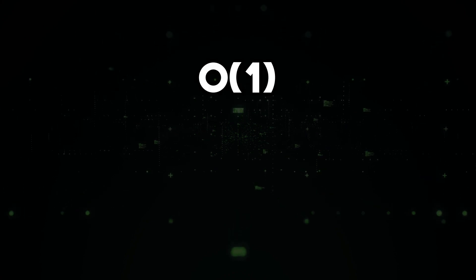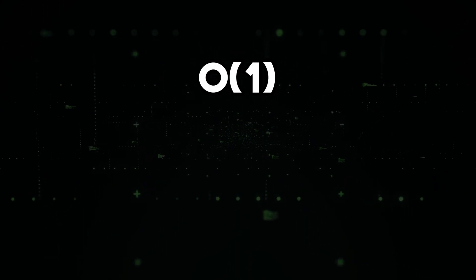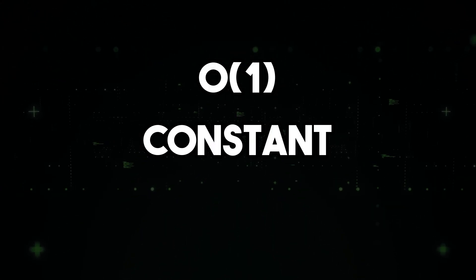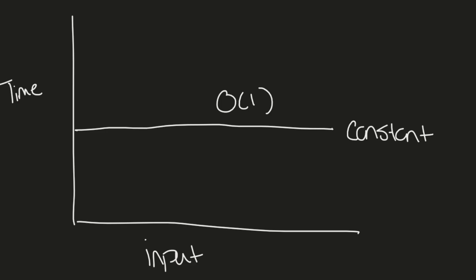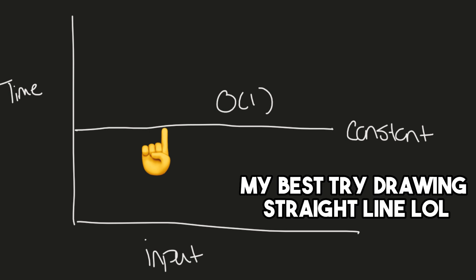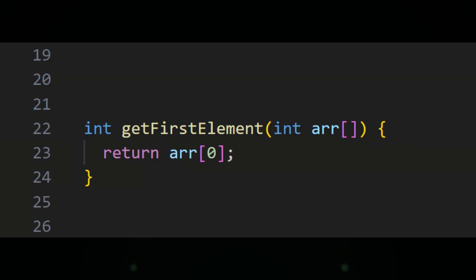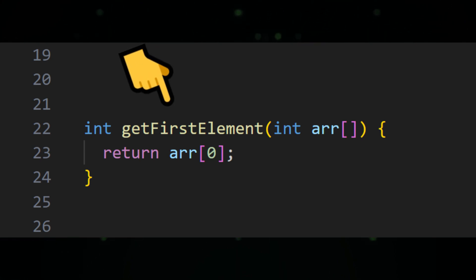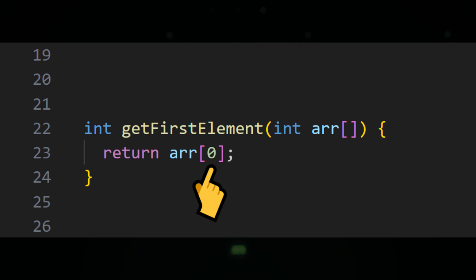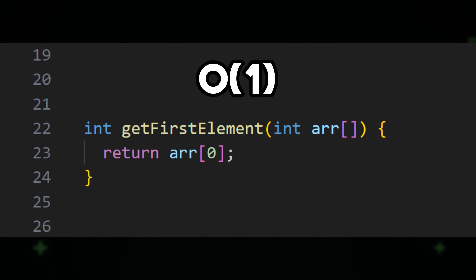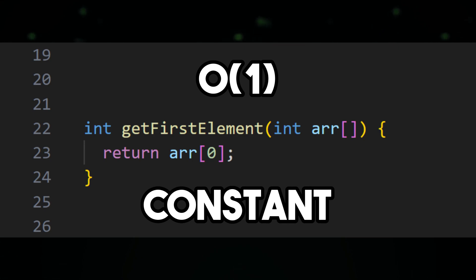Let's start with O(1) time complexity, also known as constant time complexity. This means that the time required for an algorithm to complete does not change as the size of the input increases. Here's a C++ code example: get first element of an array. This algorithm simply returns the first element of an array, and regardless of the size of the array, it has O(1) or constant time complexity.